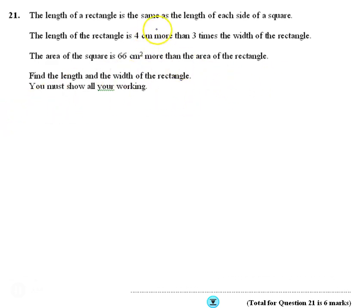It says the length of the rectangle is the same as the length of each side of a square. The length of the rectangle is 4 more than 3 times the width. The area of the square is 66 more. Okay, so it's a bit hard to kind of keep track of what's going on. So let's just roughly draw out what we think is happening.